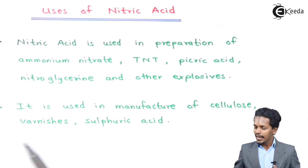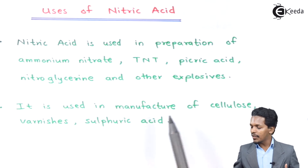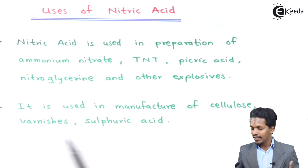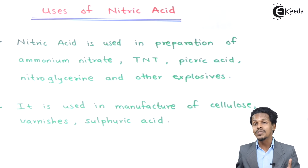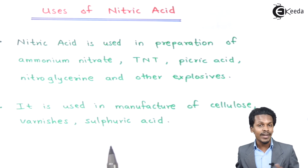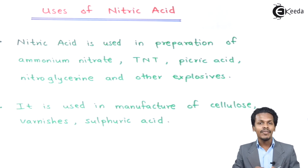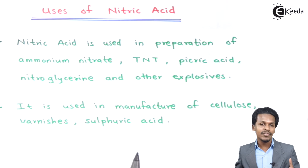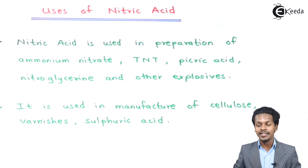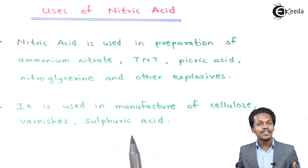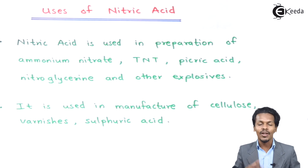The next use is that nitric acid is used in the manufacturing of cellulose, and also in the preparation of sulfuric acid via the contact process. We have a separate lecture on how sulfuric acid is prepared using nitric acid.